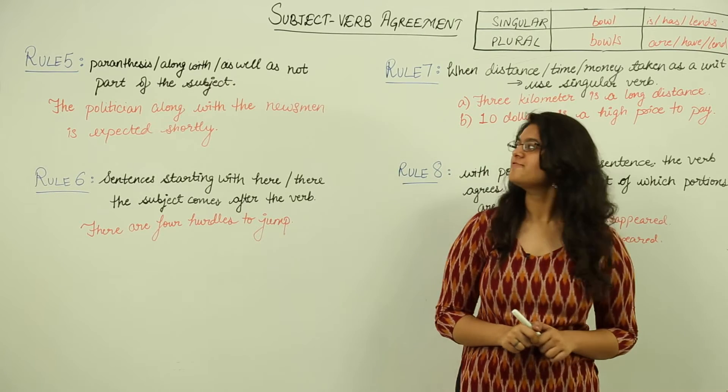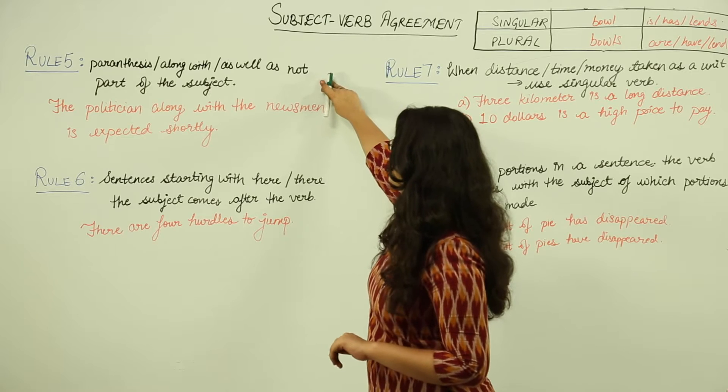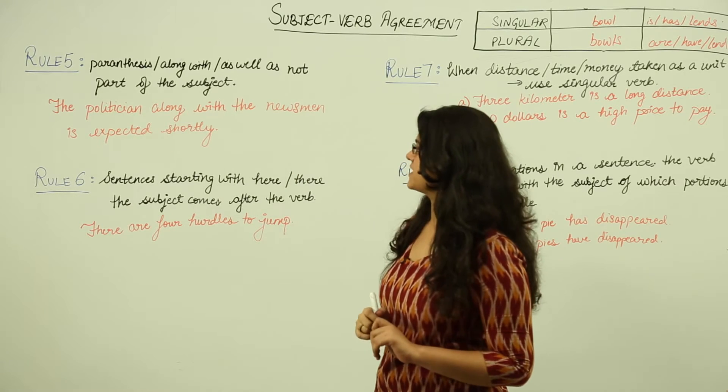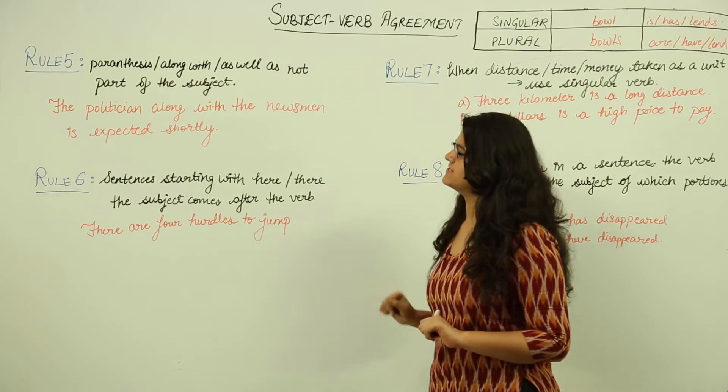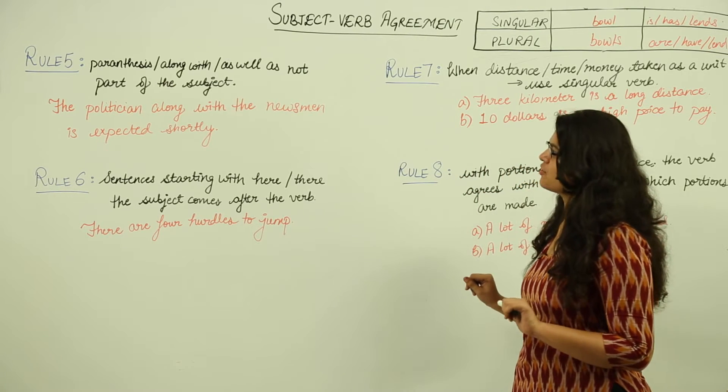The next rule, rule 5, is parenthesis along with or as well as are not part of the subject. Here let's read this sentence: the politician along with the newsman is expected shortly.